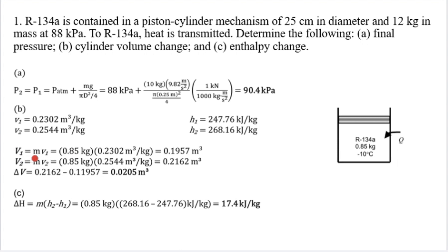V1 equals m times v1, which is 0.85 kg times 0.2302 m³ per kg, equals 0.1957 m³. V2 equals m times v2, which is 0.85 kg times 0.2544 m³ per kg, equals 0.2162 m³. Change of volume equals 0.2162 minus 0.1957, so the cylinder volume change is 0.0205 m³.